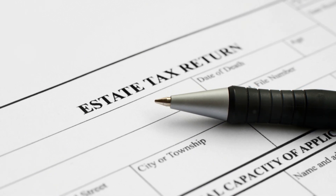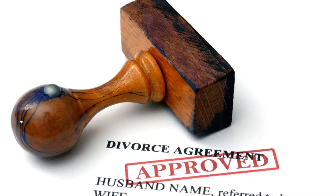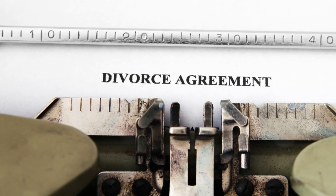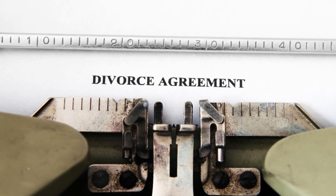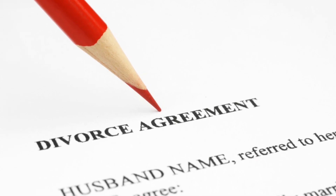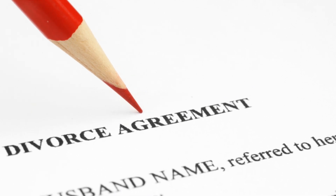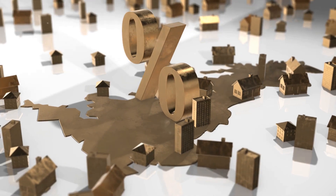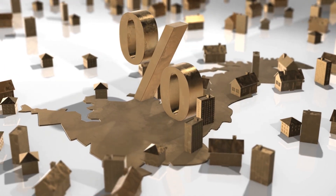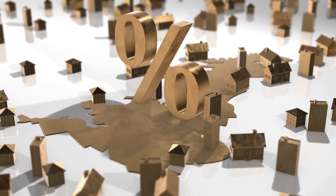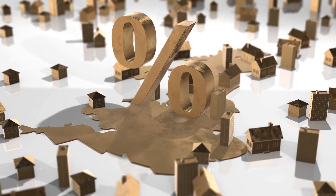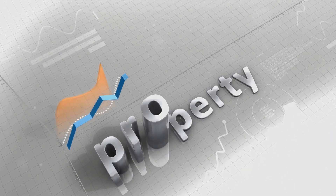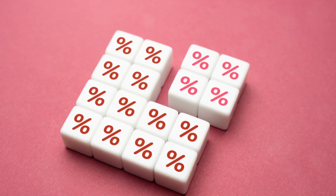Three: transfer of property in a divorce or separation. No SDLT is payable when property is transferred between partners as part of a divorce settlement or when dissolving a civil partnership. For example, if a couple divorces and one party transfers their share of the marital home to the other, no SDLT is due on this transfer.